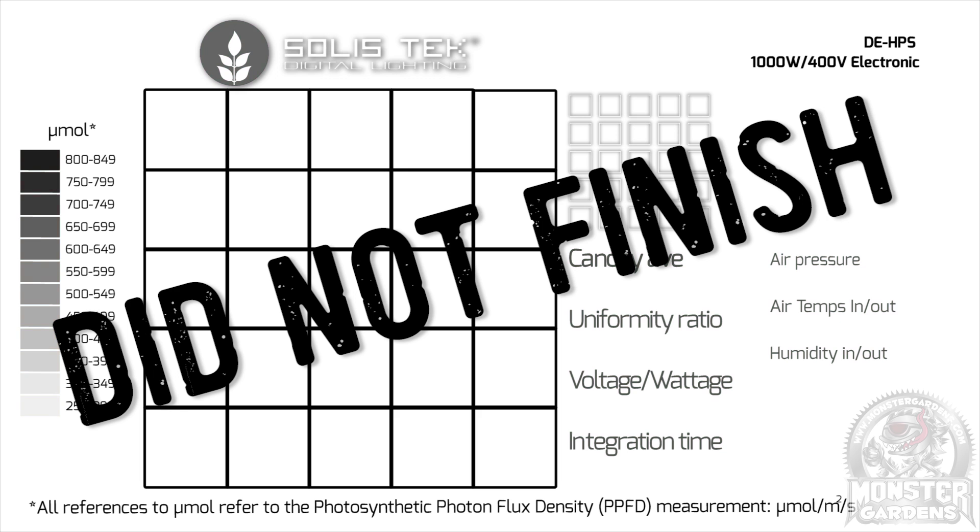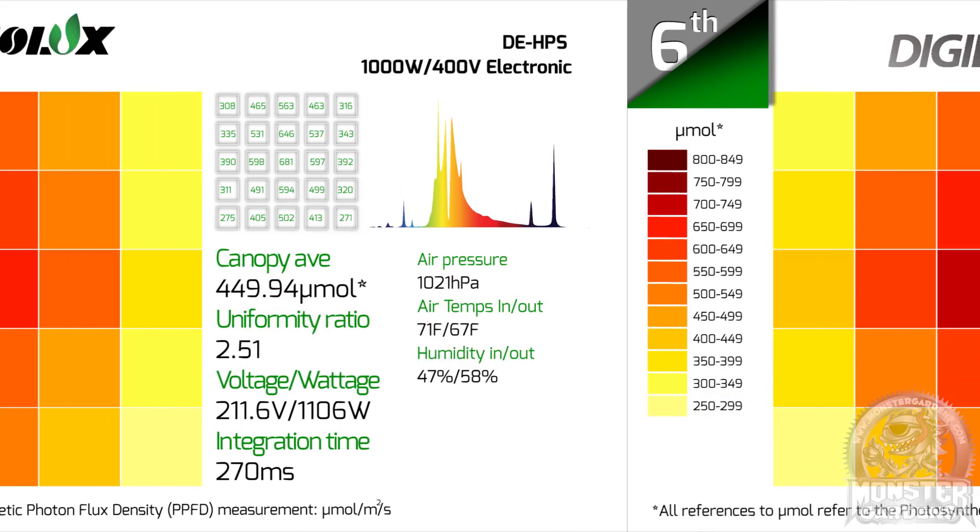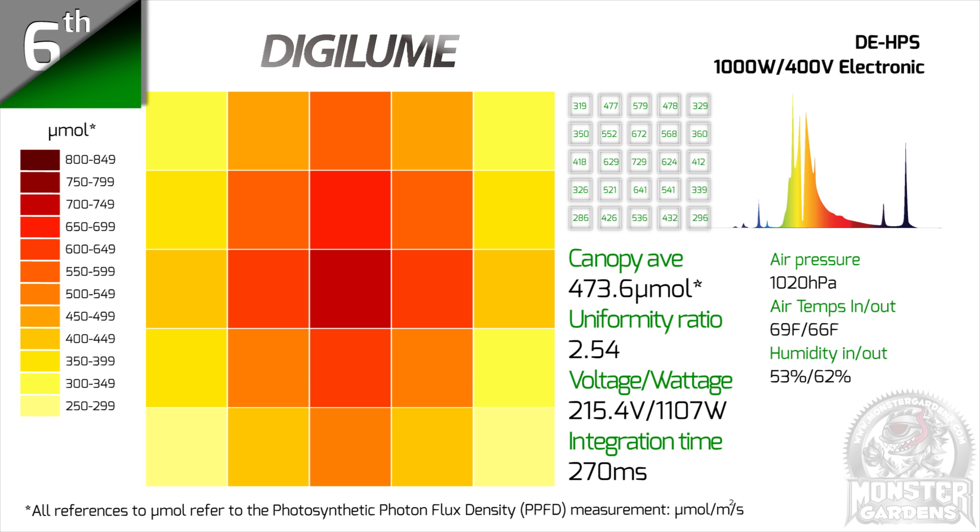But moving on, it starts to get interesting. In seventh is the Nanolux, with a canopy average of 449.94 micromoles. The sixth spot has been taken by the Digilume. It comfortably beat the Nanolux, with a margin of over 23.5 micromoles.